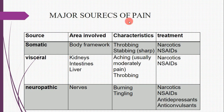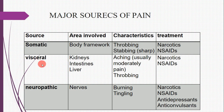The major sources of pain are somatic, visceral, and neuropathic. Somatic pain involves the body framework and is characterized as throbbing, stabbing, or sharp; treatment includes narcotic analgesics or NSAIDs. Visceral pain involves organs such as the kidneys, intestines, and liver; it presents as aching, migratory, or throbbing pain and is also treated with narcotics and NSAIDs.